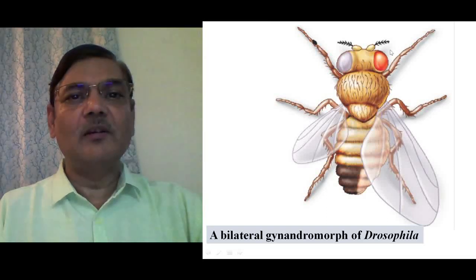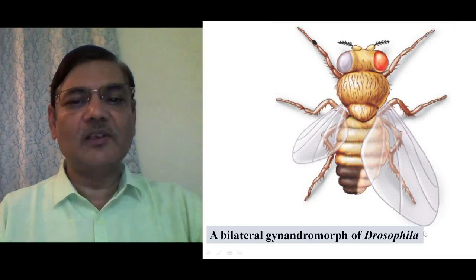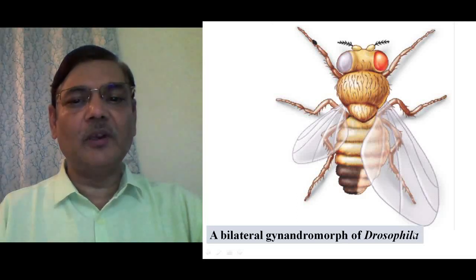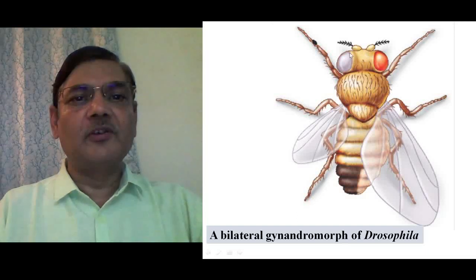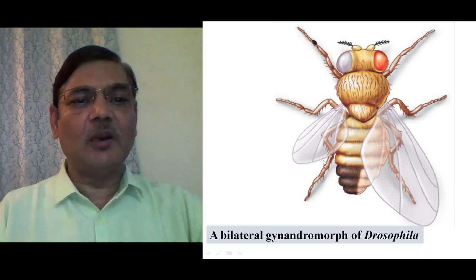Another important peculiarity is that the eye on the right (female) side is red in color, and the wing on the female side is quite large — it is the normal shape of the wing. But on the left side, the eye color is completely white, and the wing is quite small, referred to as a miniature wing.